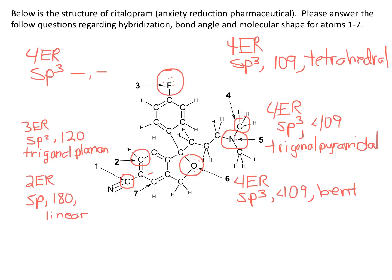My last center, this carbon, has eight electrons around it, two single bonds and a double bond. So that is going to be three electron regions, and that means hybridization is sp2, bond angle is 120, and shape is trigonal planar.